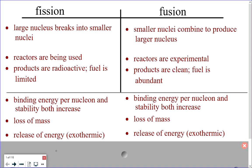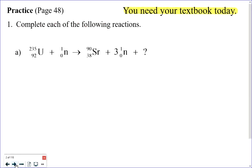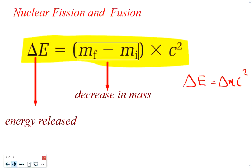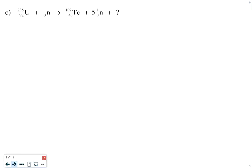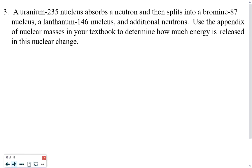The teacher will discuss binding energy later. Moving to student questions, a student asks about question 3. The question says to use the appendix of nuclear masses — the page 881 table. On an exam, masses would be given to you, but the teacher wants to walk through this one. To use the mass table to determine the energy produced, you need to know all the pieces you start with and end up with.